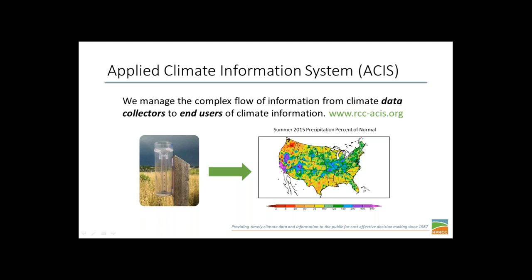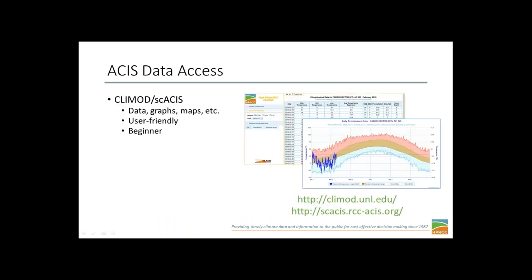You've probably all seen these maps — this is probably one way that most people interact with ACIS. There are a lot of different ways to interact with ACIS. You can use an interface like SCASIS, or we have different interfaces like Climod for the general public, XMASIS for the National Weather Service, and AGASIS for the USDA. They're all different ways to interact with the data — you can pull data, make graphs, charts, and even maps.